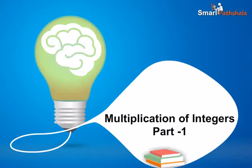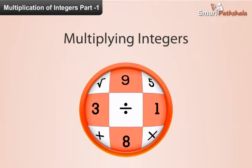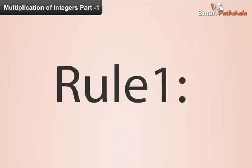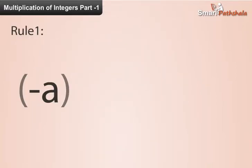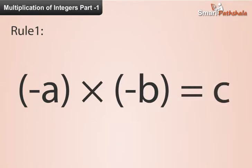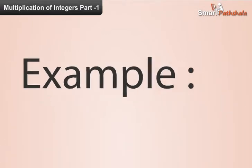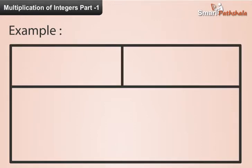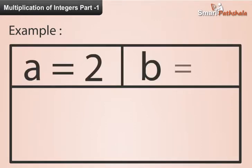Multiplication of integers, part 1. In this module, let us learn about multiplication of integers. There are two rules to be followed while multiplying integers. Rule 1: the product of two same-sign integers is the product of their values with a plus sign. For example, the product of 2 and 5 is 10.